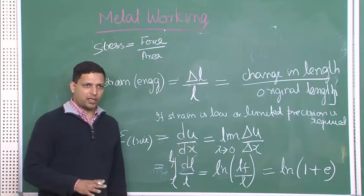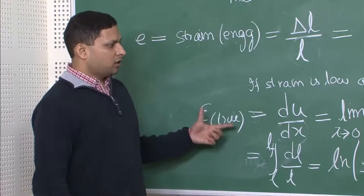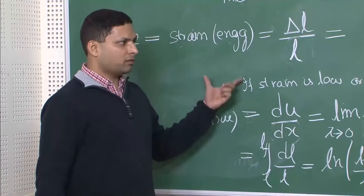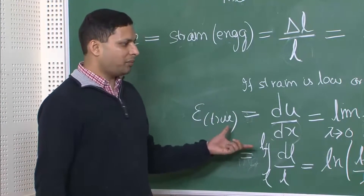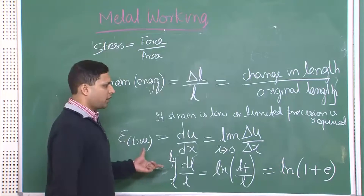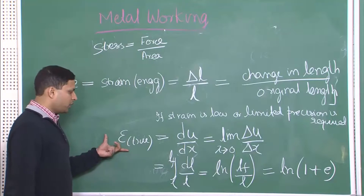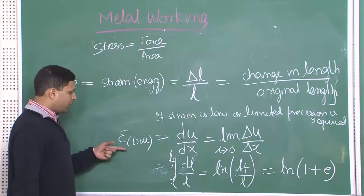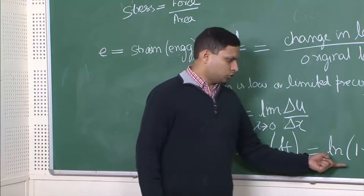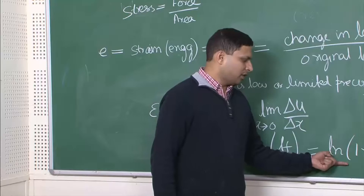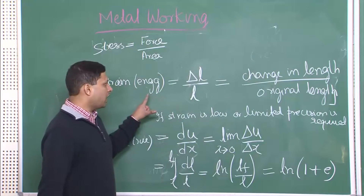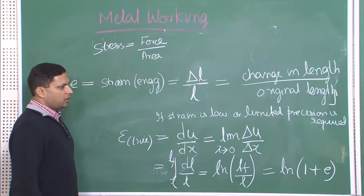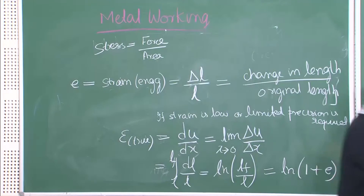Do not be scared by these equations — these are straightforward things that may look intimidating in formal notation. All you need to remember is that there are two kinds of strains: engineering strain and true strain. If you want to find true strain, use epsilon = ln(1 + E), where E is the engineering strain, which we know is simply delta L divided by L.